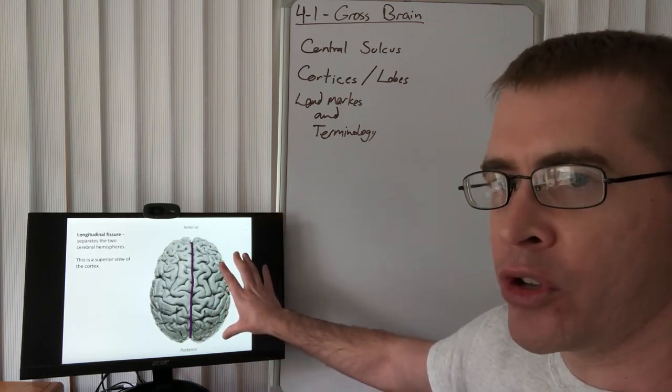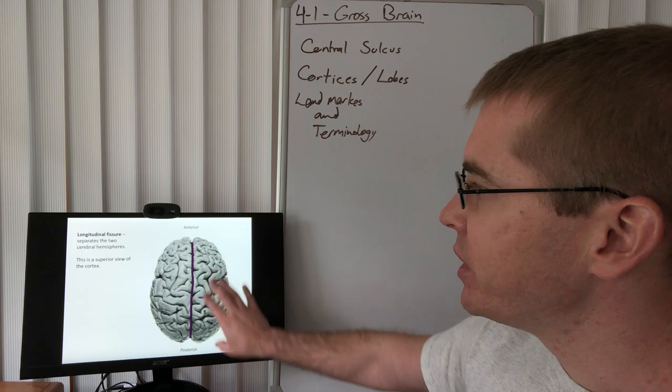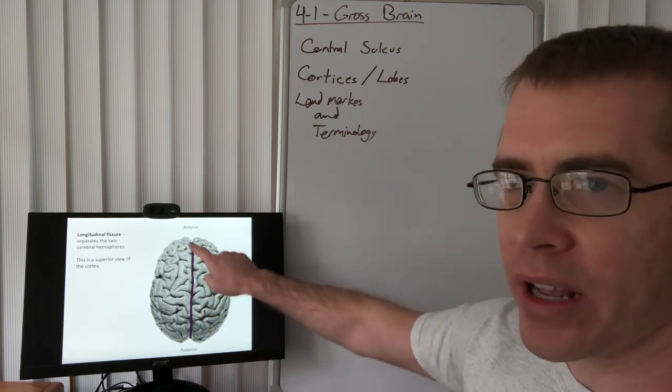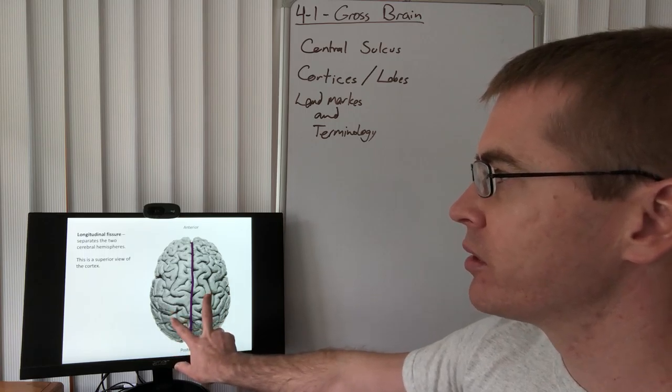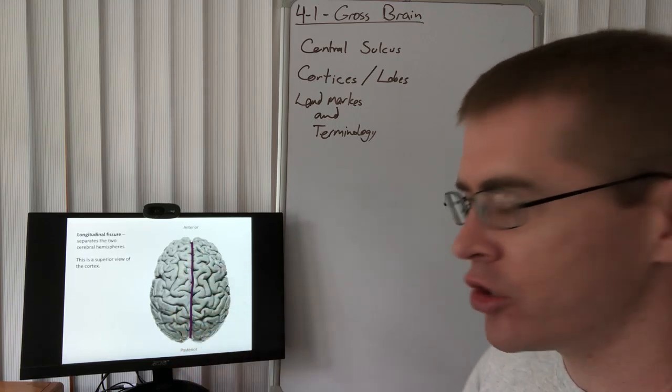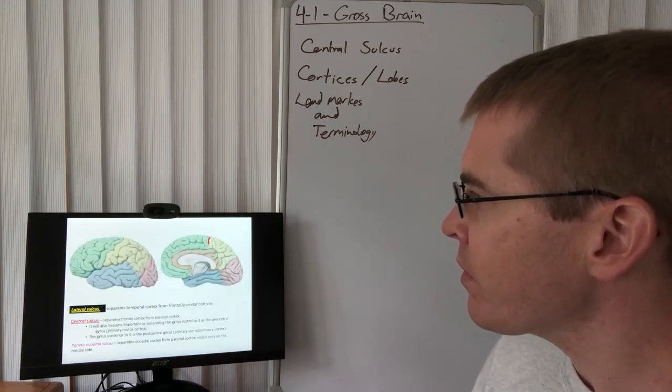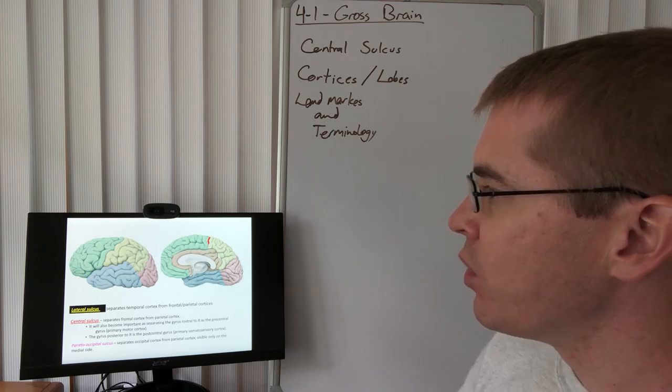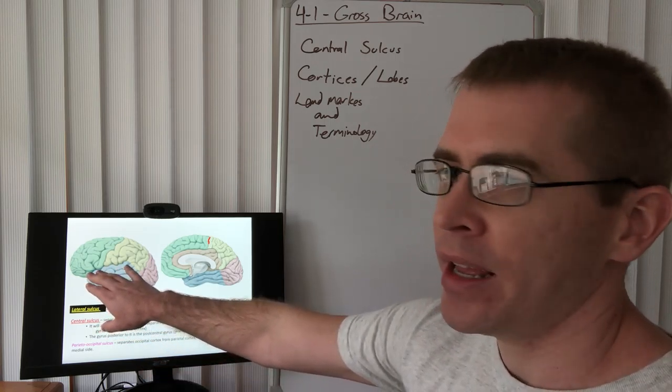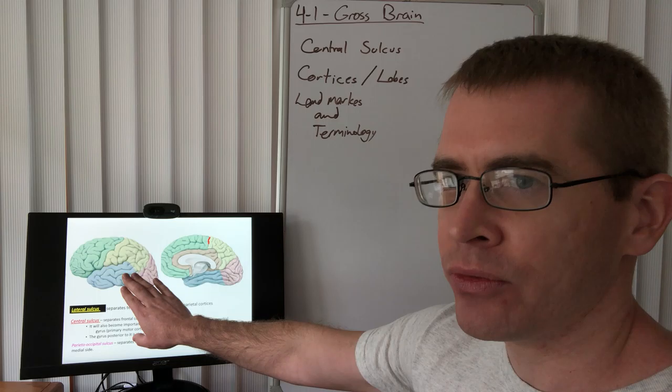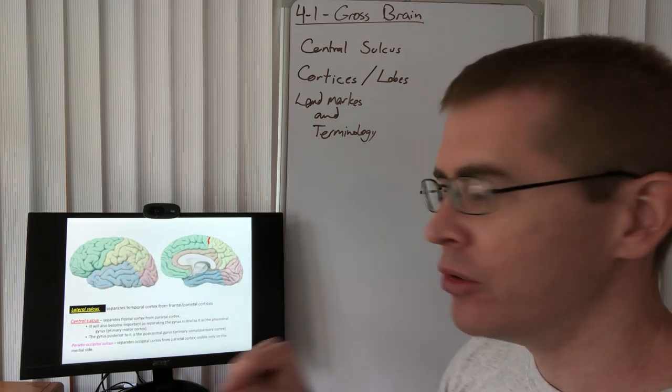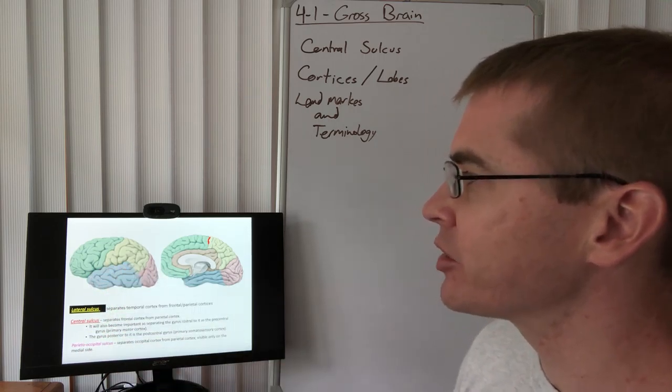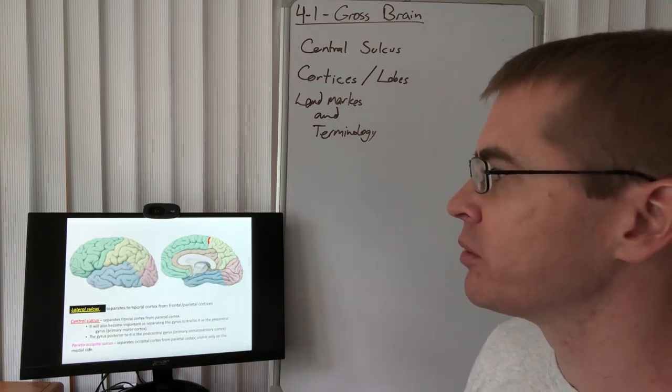So this is a superior view of the brain where we can see this gyrencephalic cortex, and we can see it's separated into two hemispheres, a left and a right hemisphere, by this longitudinal fissure. In addition, we can see that on the side of the brain, so here we have a lateral view of the whole brain, we can see a long sulcus, a long groove on the side there, separating the upper from the lower portion of the brain. And that is called the lateral sulcus.